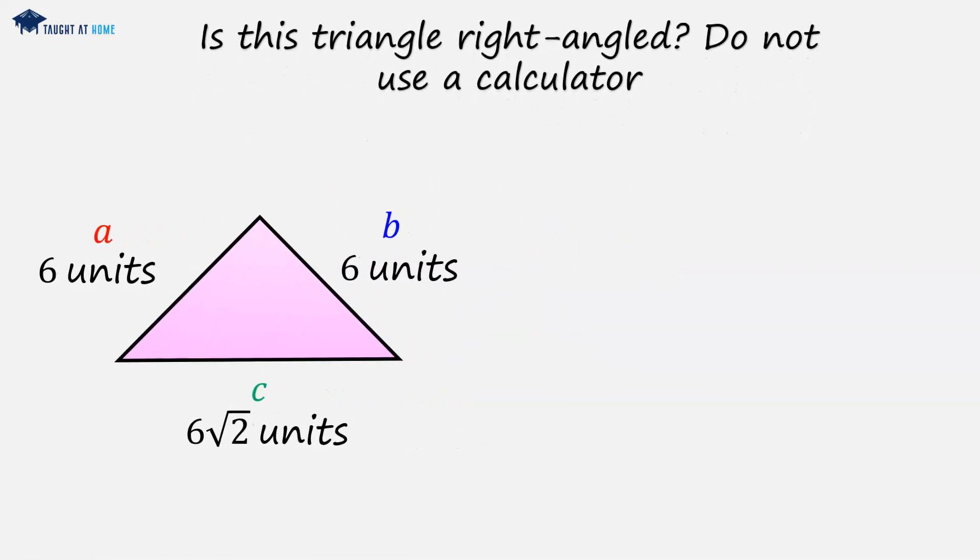So this is where we will be using surd simplification, because we're given the hypotenuse as a surd, so we can just use the rules of surds here. So the question is, does c squared equal a squared plus b squared? So c squared, does that equal 6 squared plus 6 squared?